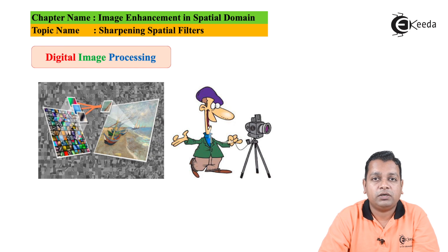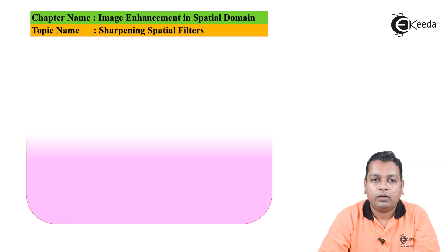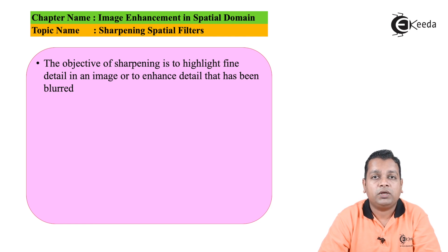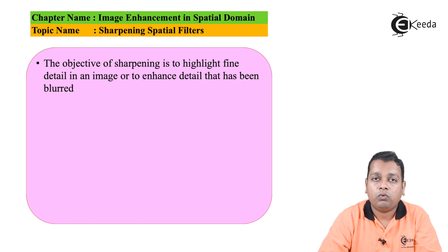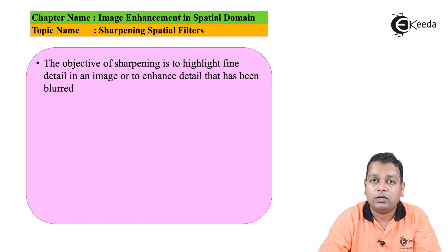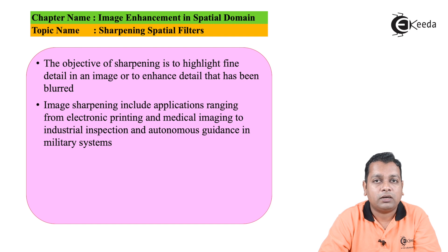Sharpening spatial filters are one of the important topics in image enhancement in the spatial domain. The objective of sharpening is to highlight the fine details in an image and to enhance detail that has been blurred. We want every fine detail in the image sample highlighted — that is image sharpening. Applications range from electronic printing, medical imaging, industrial inspection, and autonomous guidance in military systems.